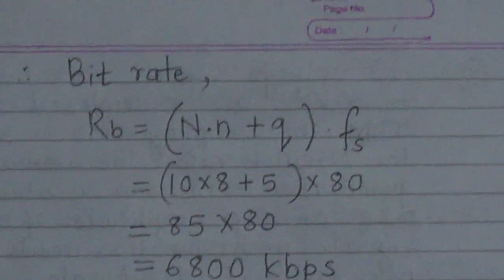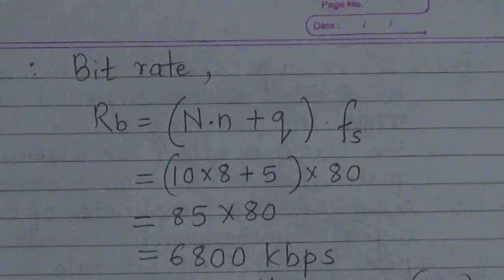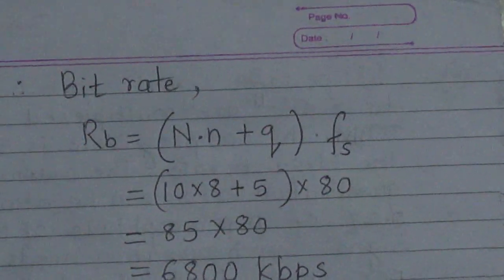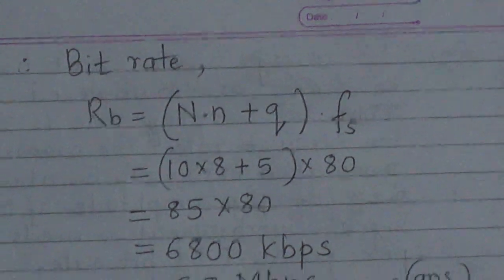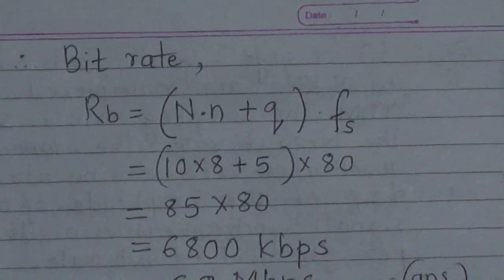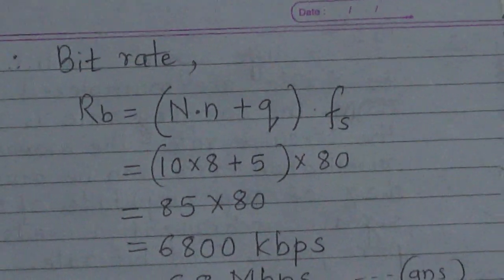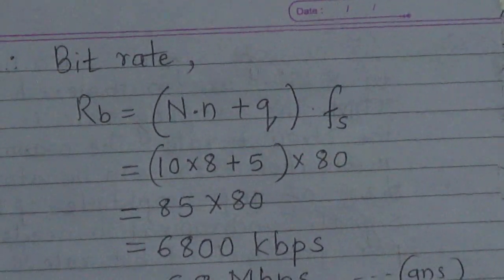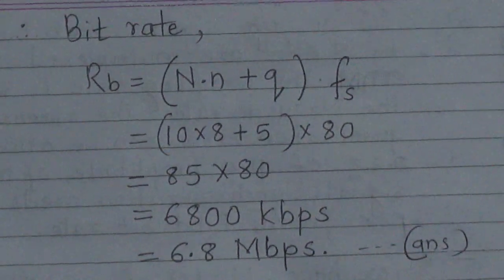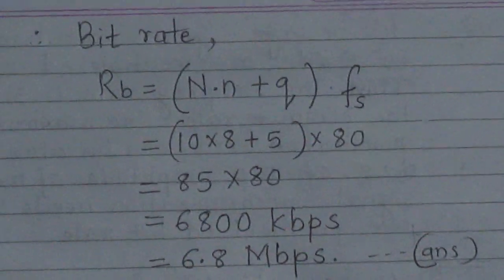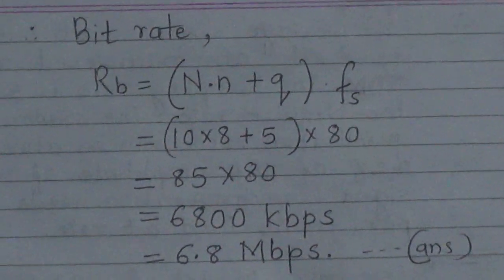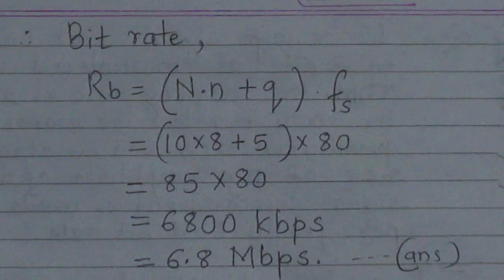Now we calculate the bit rate. The formula is rb = n × (N + q) × fs, where there are 5 synchronization bits. Putting in the values, the bit rate rb = 6.8 Mbps. Thank you for watching this video.